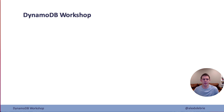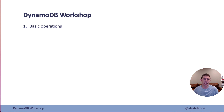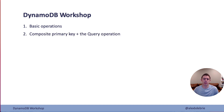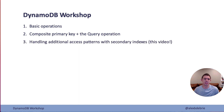This is part of a DynamoDB workshop that has three parts, so make sure you go check out the other parts as well. In part one, we covered basic operations — creating a table, inserting an item, reading that item back, using condition expressions when writing items, things like that. Part two was all about using a composite primary key, which gives you more power and flexibility, and especially using the query operation with that composite primary key. And finally, this third part is all about handling additional access patterns using secondary indexes.